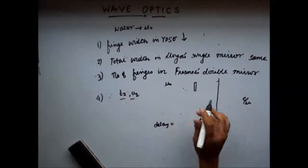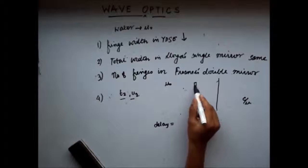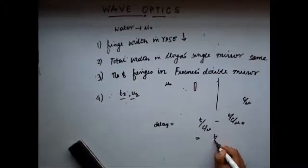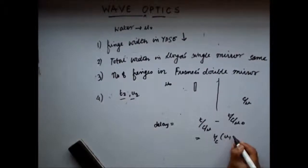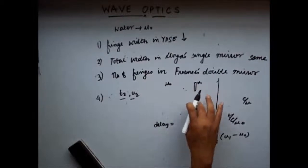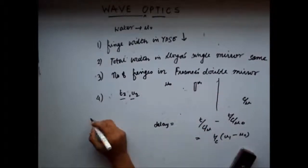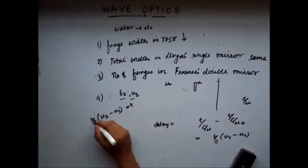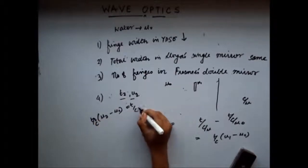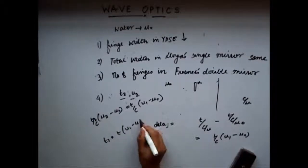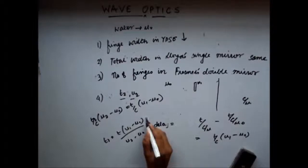If this glass slab was not there, the time taken by light to cover that distance T would be T divided by C by mu naught. So the delay is T by C times (mu 1 minus mu naught), where mu 1 is the refractive index of the first slab. When we introduce the second glass slab, it should provide the same amount of delay so both cancel out. So T₂ by C times (mu 2 minus mu naught) equals T by C times (mu 1 minus mu naught), giving T₂ equal to T(mu 1 minus mu naught) divided by (mu 2 minus mu naught).